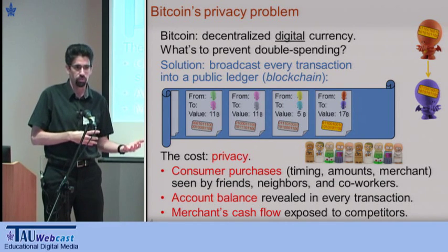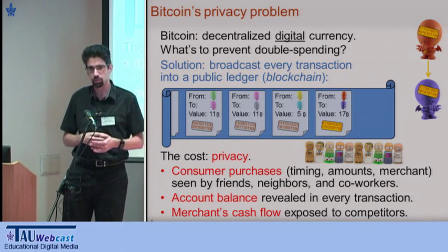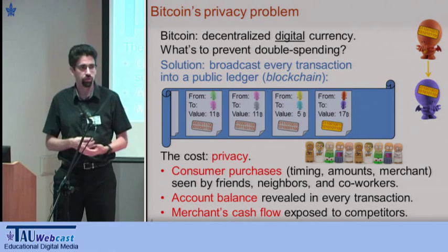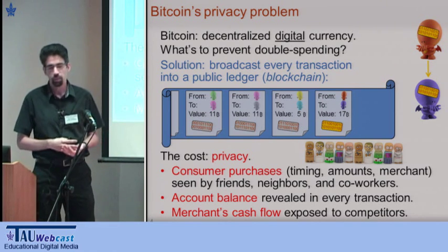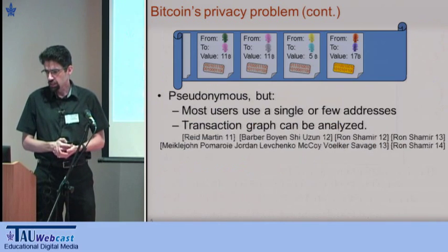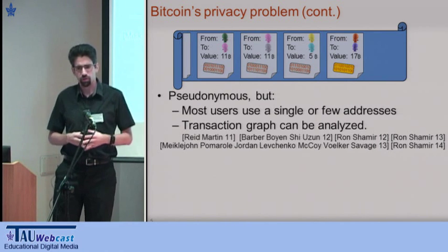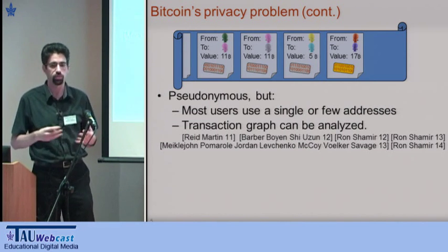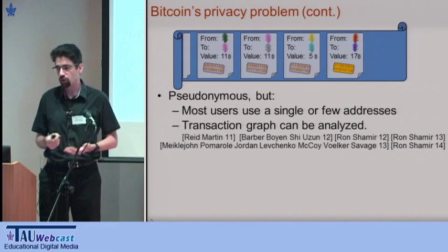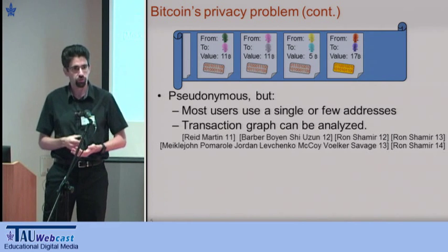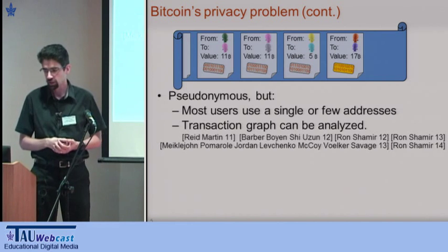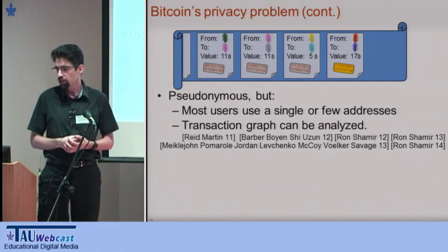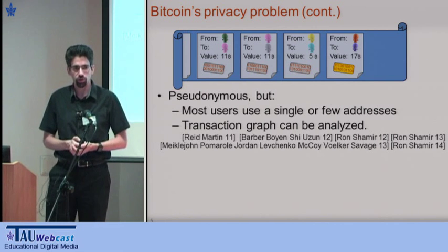So if you're a consumer making a payment, anyone can observe who you paid, when and how much. This can be embarrassing — it's like posting your credit card statements in real time on the internet. When you pay a merchant, they can see how much you have left in your wallet, maybe charge you accordingly, or signal to someone down a dark alley. Even merchants are vulnerable to competitors who can now see their cash flow in real time. There is folklore that Bitcoin is anonymous or pseudonymous, but in reality most users have one or very few keys, and research shows the transaction graph can be analyzed and users can be identified.